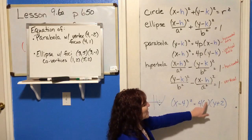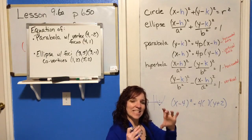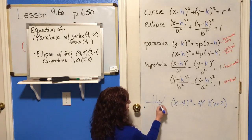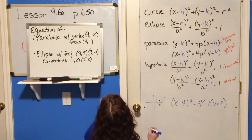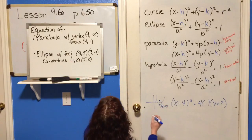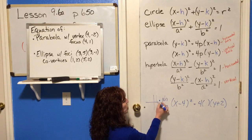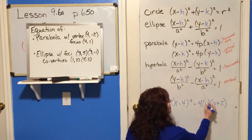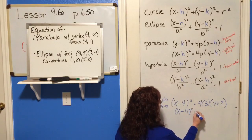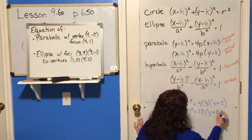The only other part we need is P — the distance between the vertex and the focus. The vertex is at 4, negative 2 and the focus is at 4, 1. To get from there to there I go 1, 2, 3 up, so P equals 3. My final equation is X minus 4 squared equals 12 times Y plus 2.